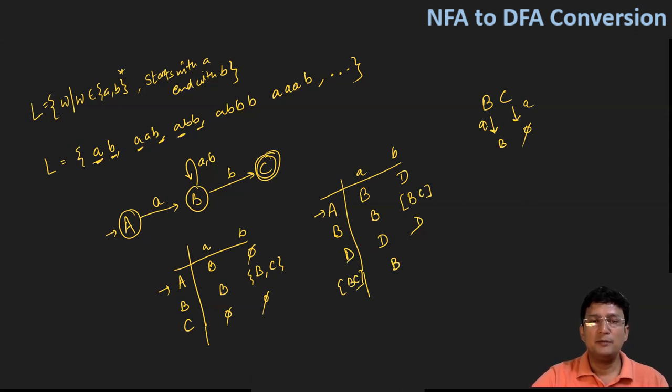Similarly, BC on getting symbol small b: B on small b goes to BC and C on small b is undefined. So if you take the union of these two, you'll get state BC here. Okay, so no new state has come here. That's why I am now in a position to draw the DFA diagram.